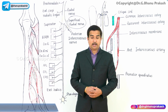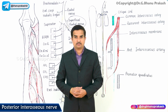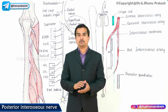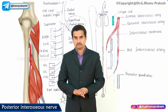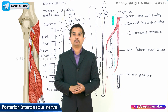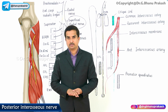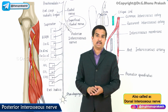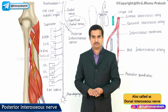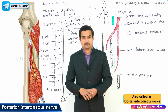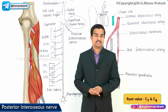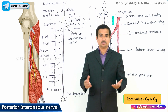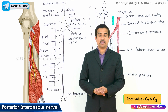In today's session, let us discuss an important nerve of the posterior compartment of the forearm: the posterior interosseous nerve. The posterior interosseous nerve is also called the dorsal interosseous nerve, and it receives fibers from C7 and C8 spinal nerves, so the root value is C7 and C8.